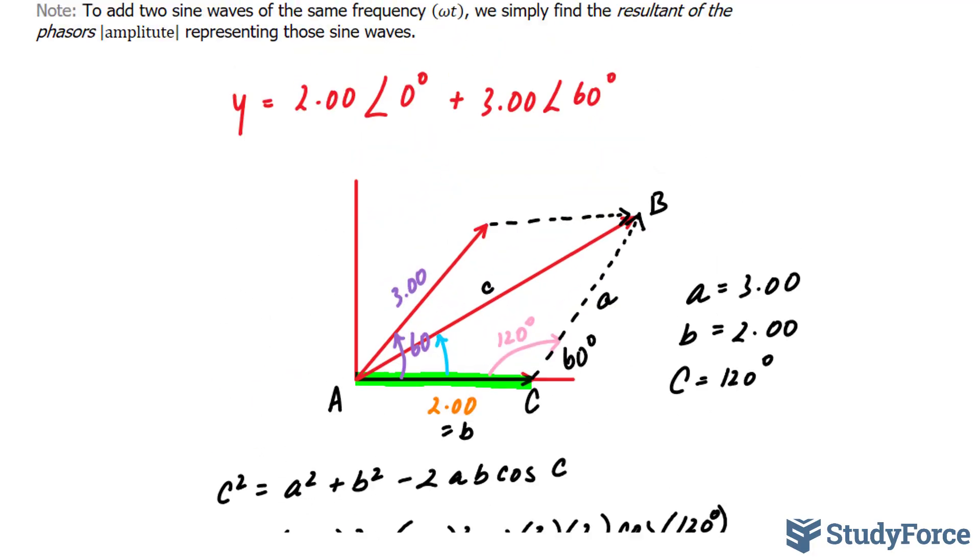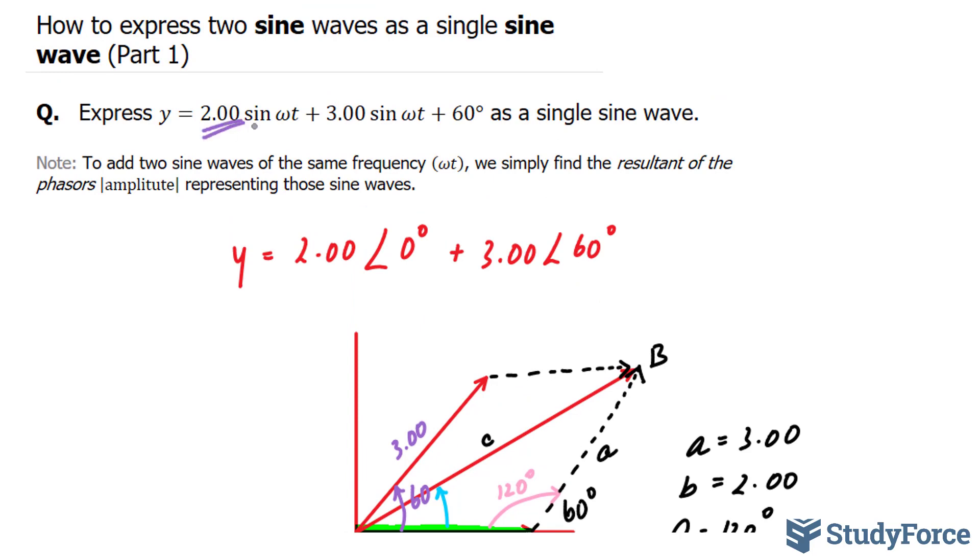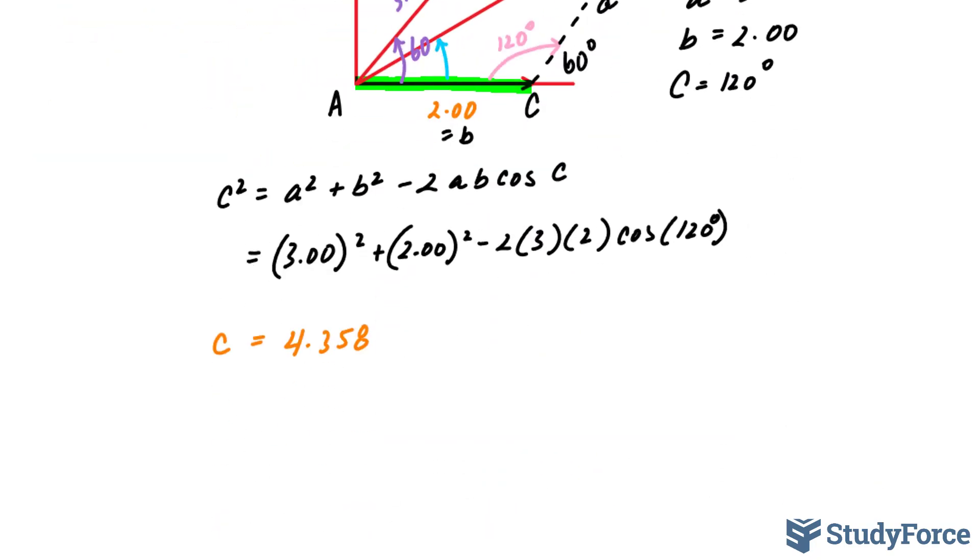Since I started off with two approximate numbers that both have three significant figures, I should also end up with an answer with three significant figures. Since this 8 is the first to go, that 5 goes up to 4.36 (8 is greater than 5, so we round upwards). That is the magnitude of the resultant vector. We still need to find its angle.